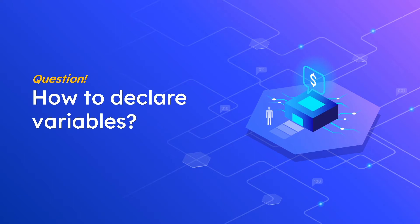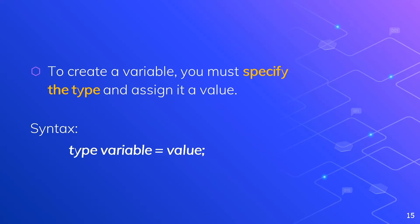How do you declare variables? To create or declare a variable, you must specify the type and assign it a value. We have a syntax or format to follow: the data type, then the variable name, then an equal sign, then the value, and a semicolon. We need to follow this format; otherwise, we will get an error.